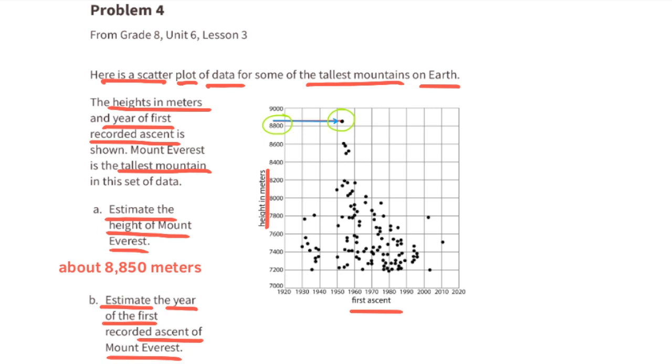B. Estimate the year of the first recorded ascent of Mount Everest. Draw a vertical line straight down from the point and it takes you to just after 1950. So we could say that the first recorded ascent was approximately 1953 or so.